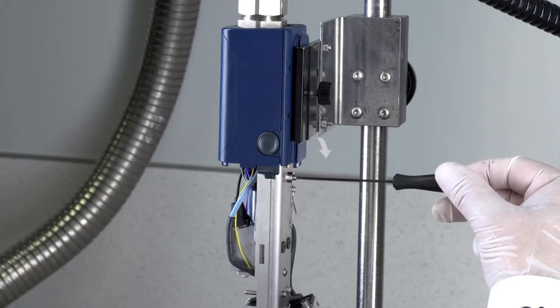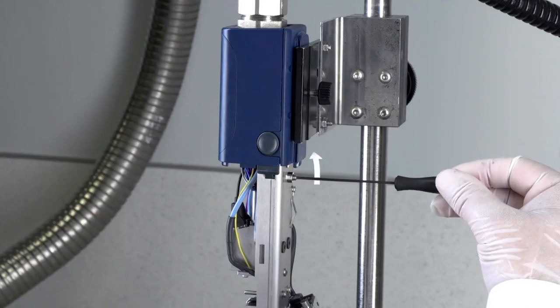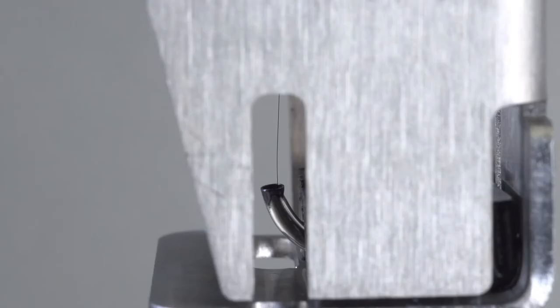Turn the set screw clockwise to slowly move the ink stream to the back of the printhead. Turn the set screw counterclockwise to slowly move the ink stream to the front of the printhead.